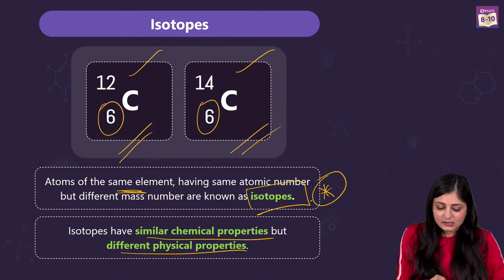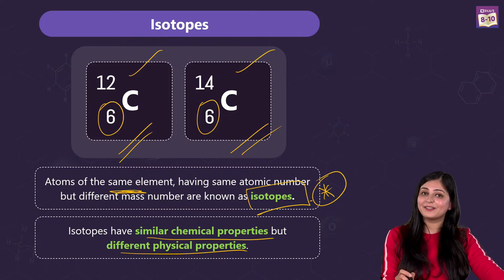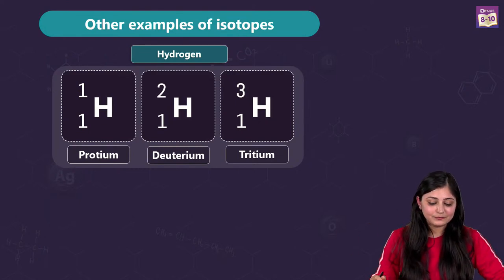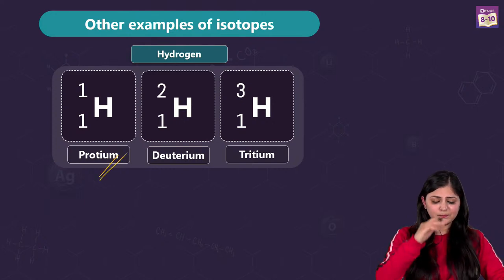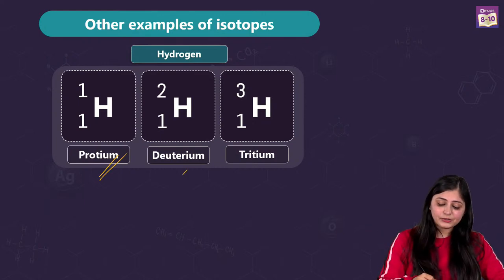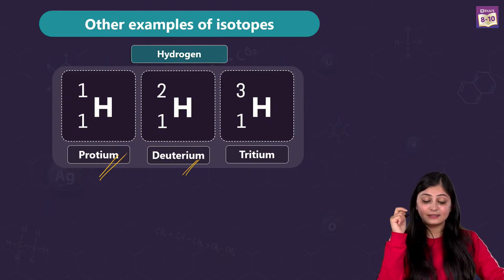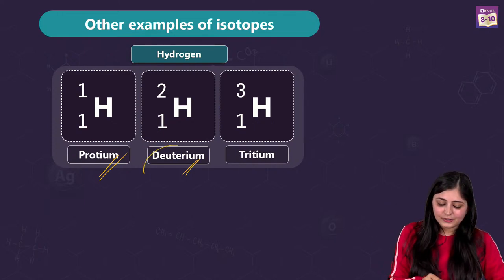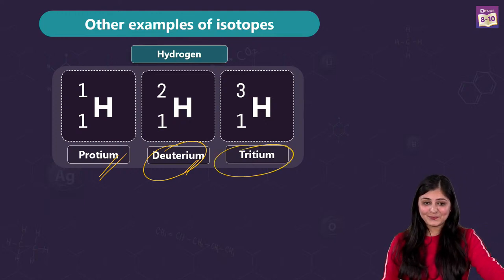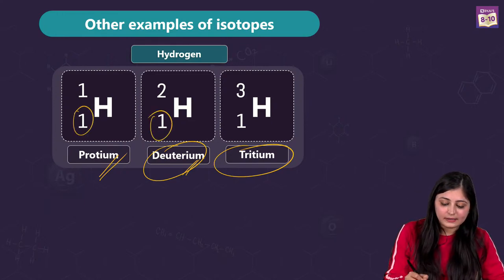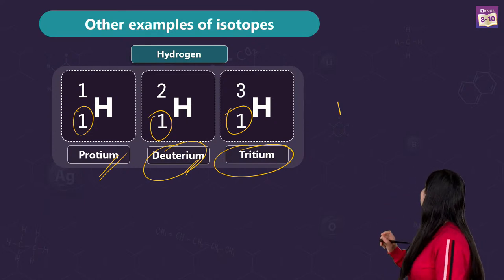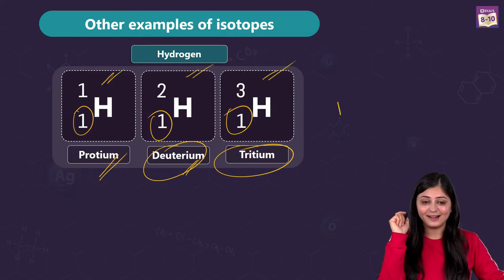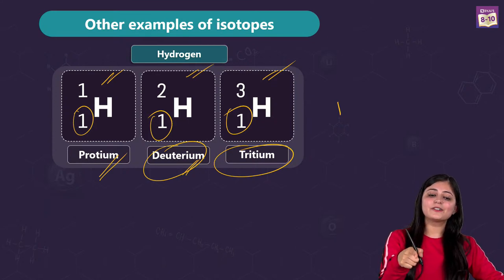Isotopes are atoms of the same element having the same atomic number but different mass numbers. We've got three isotopes of hydrogen: protium, deuterium, and tritium. Protium is very abundant. You've heard of heavy water — that relates to deuterium. Deuterium and tritium are used in nuclear reactions. What is common? The atomic number is one in all three cases. What differs? The mass numbers are 1, 2, 3 — meaning the number of neutrons varies.